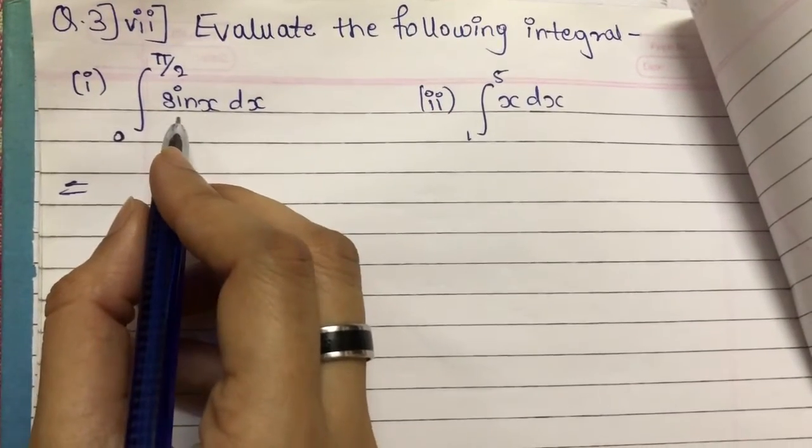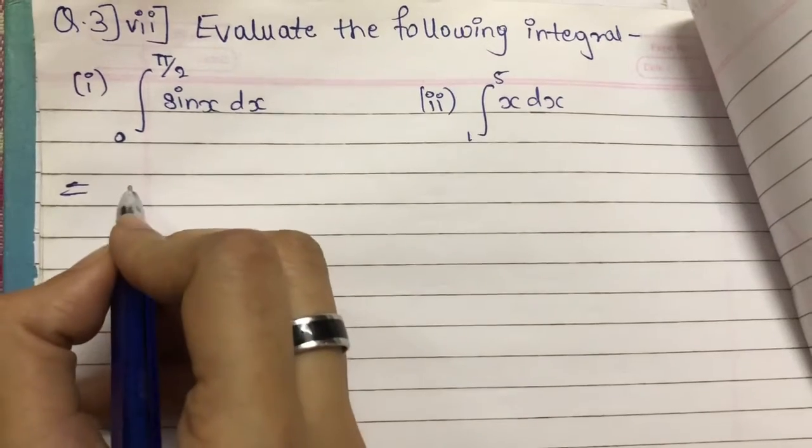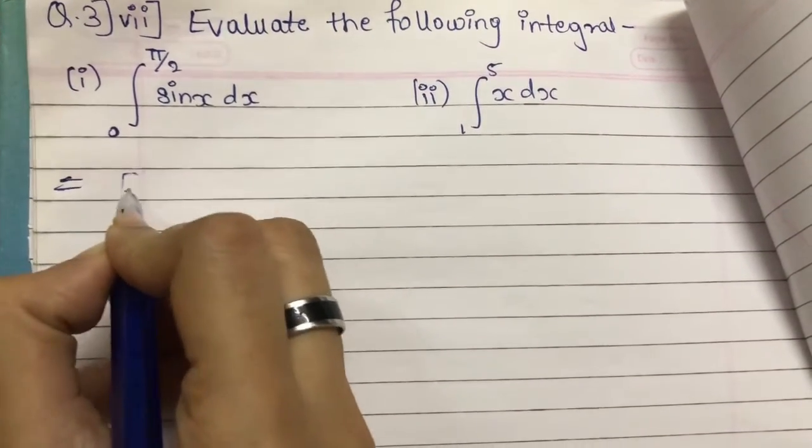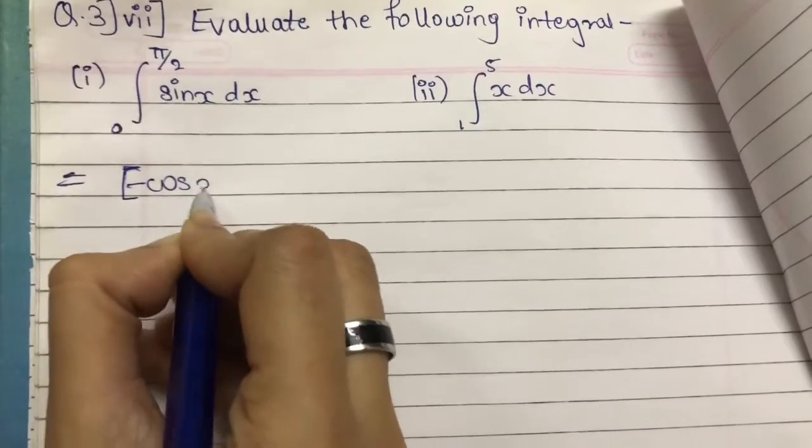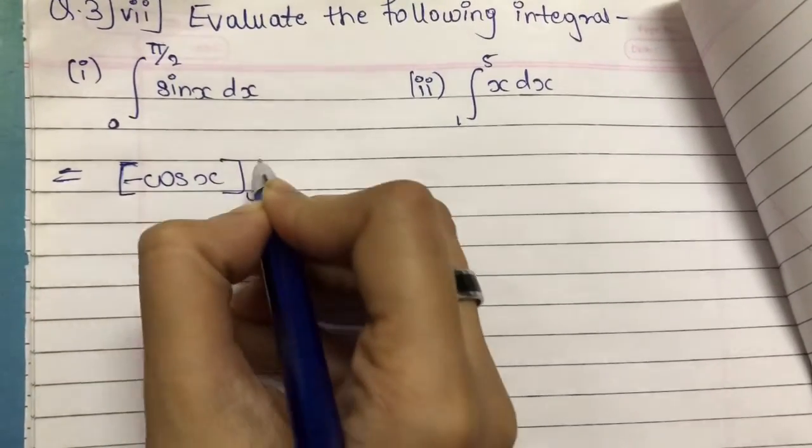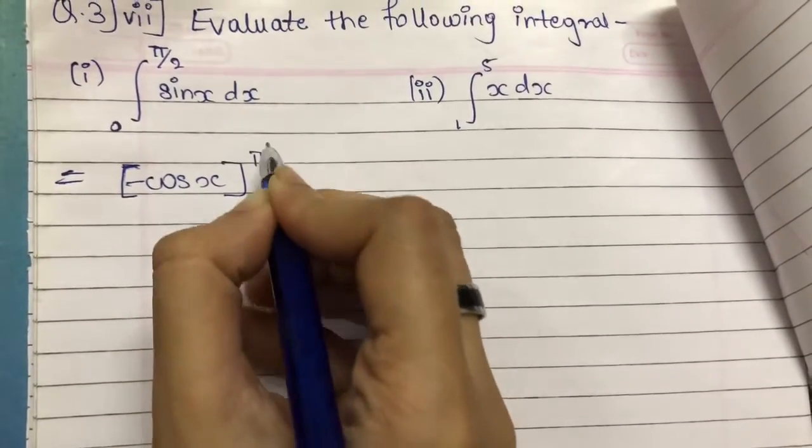So first we will find out integration of sin x. Integration of sin x is minus cos x. We will put square bracket minus cos x. After that, we have limits, that is 0 to pi by 2.